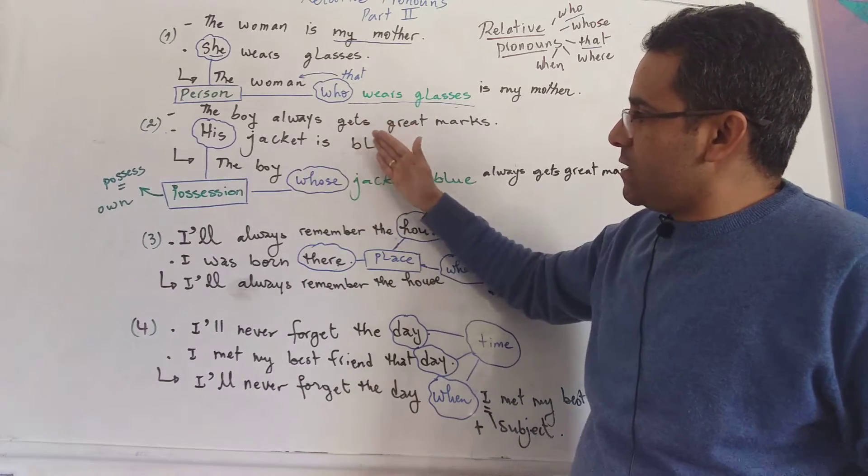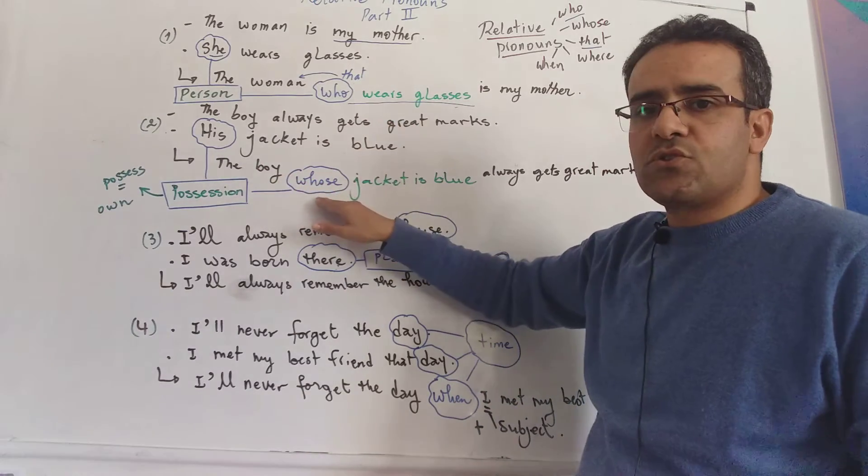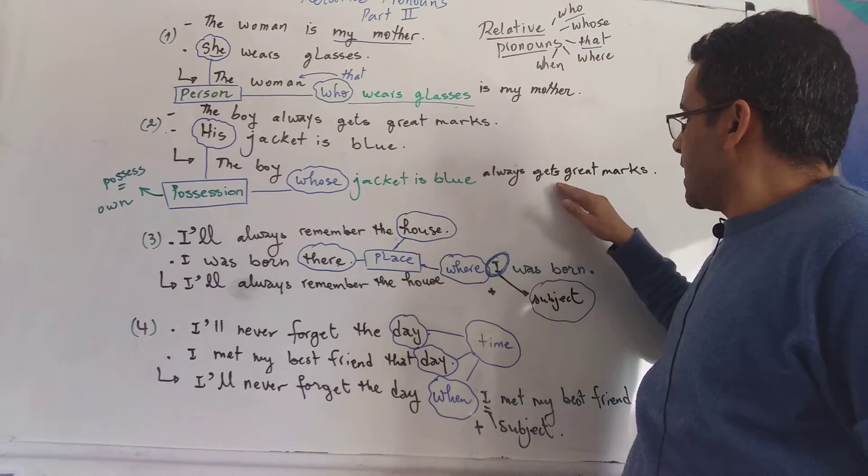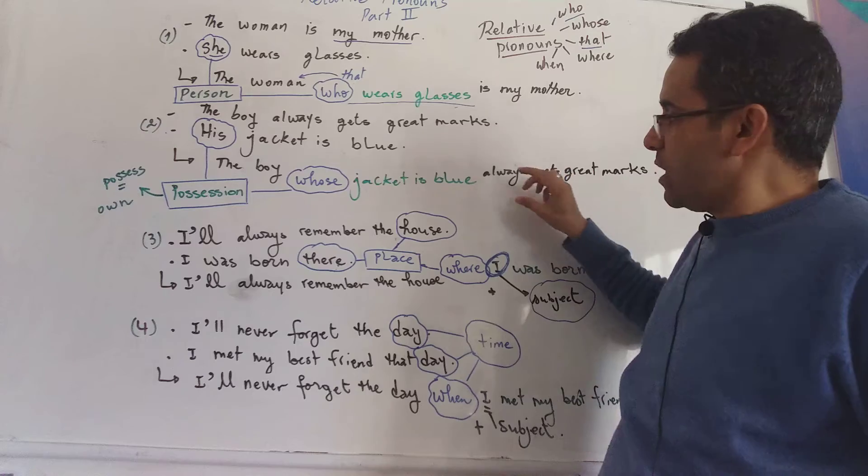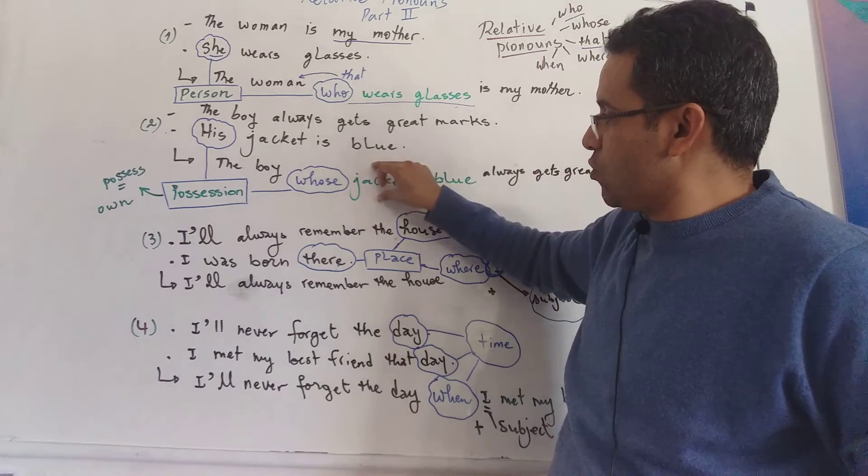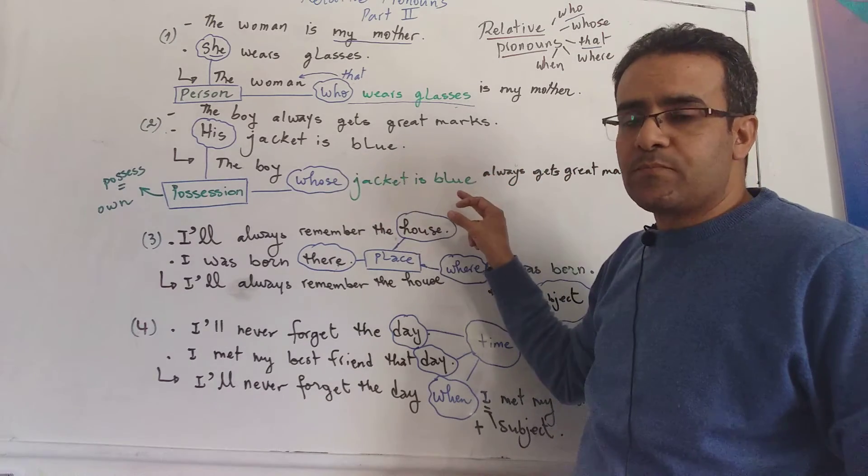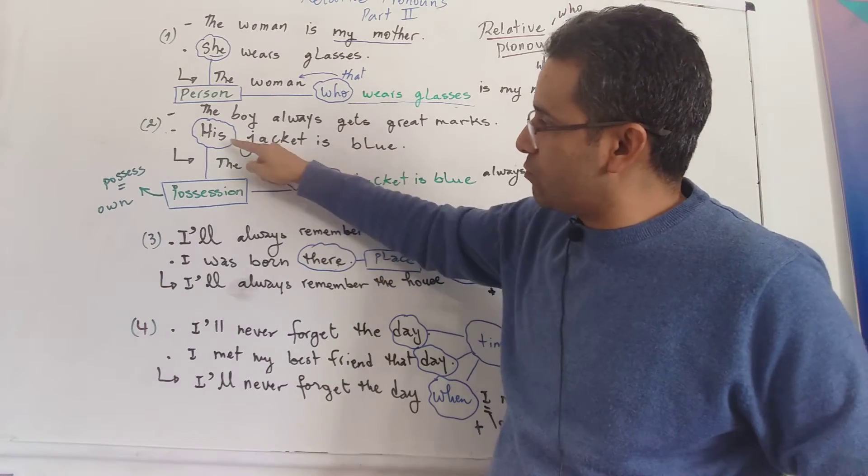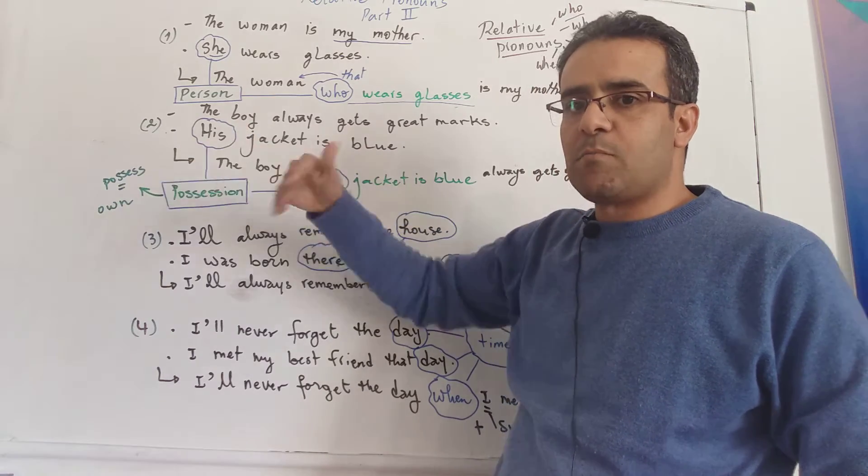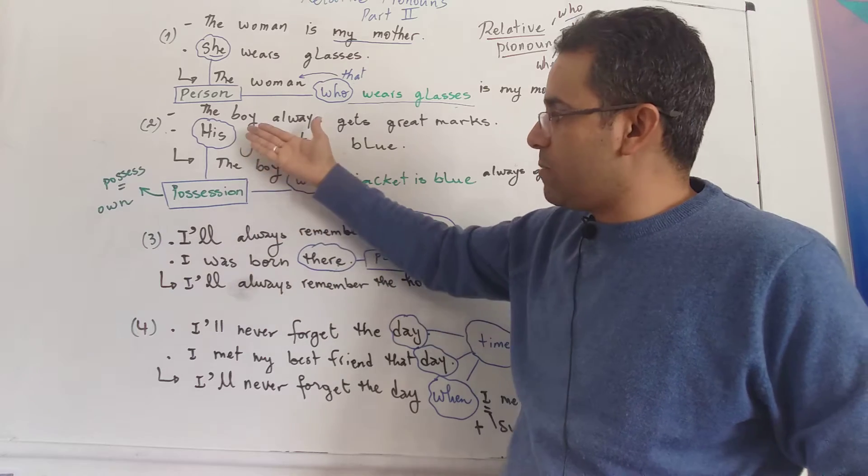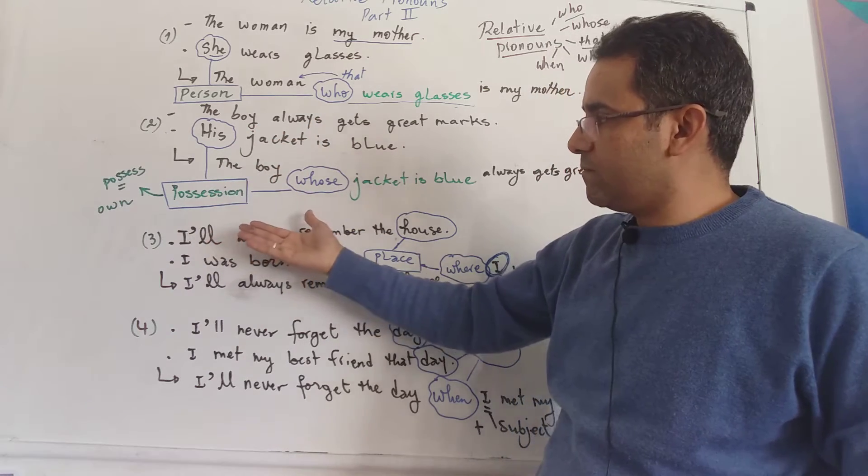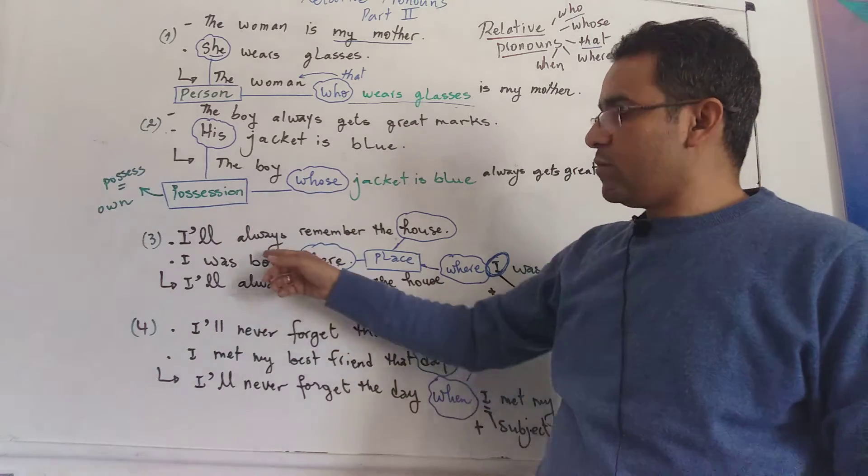So we can say the boy whose jacket is blue. You might have noticed we use whose when we have his, my, her, etc. And all that means we have possession, possessive case. Perfect. Let's move on to number three.